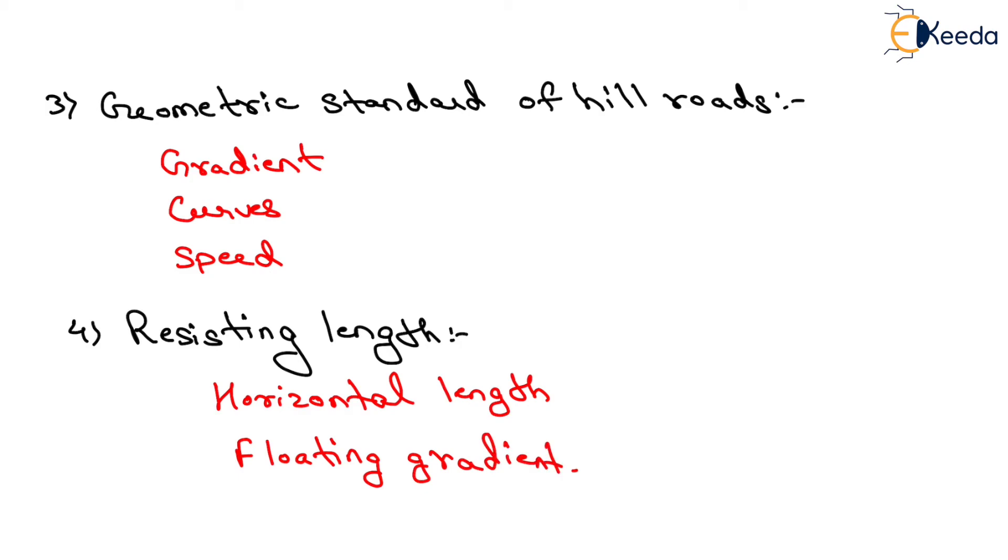In brief, the resisting length of the alignment should be kept as low as possible. Thus, the ineffective rise and excessive fall should be kept minimum. That is all about highway alignment in hilly areas. Thank you very much, students.